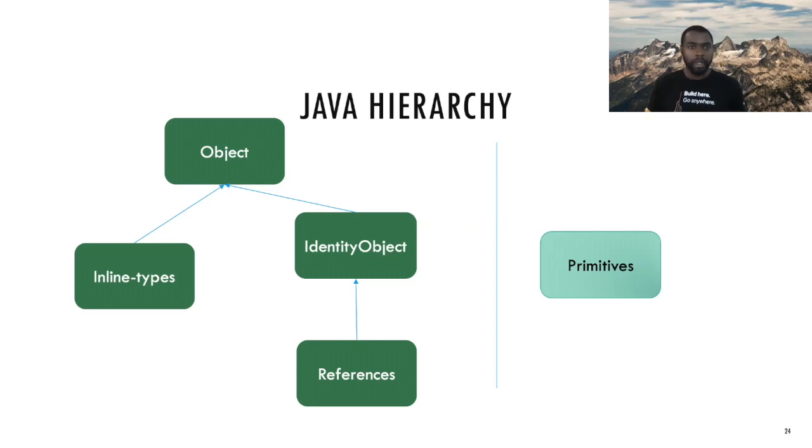To the right we have primitives. Primitives are separate, they're distinct types today. They don't really play nicely with the rest of the Java world. If you want to use them with generics, for example, you have to box it to the container type. So they're very difficult to use. But one of the goals of Valhalla is bridging the gap between primitives and the rest of the Java world. In the future there are plans to convert primitives to be inline types. And once this is done, then everything kind of fits nicely together.